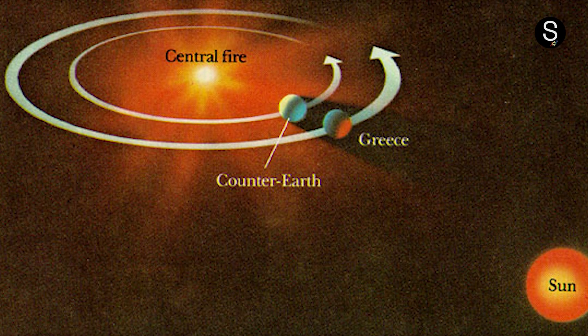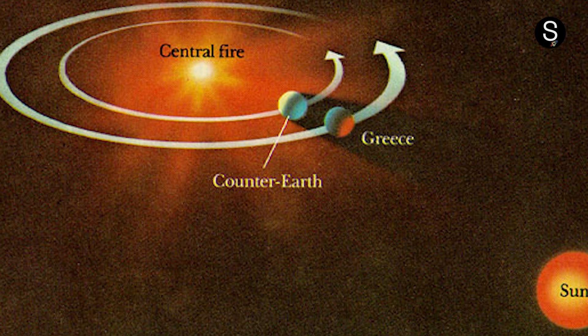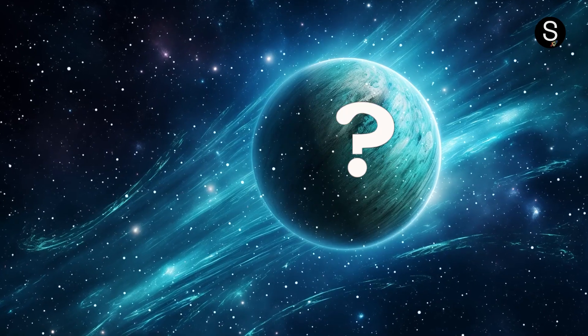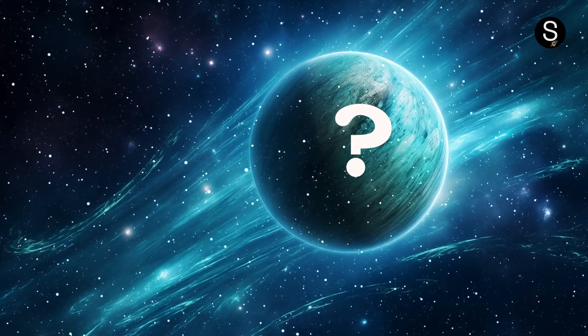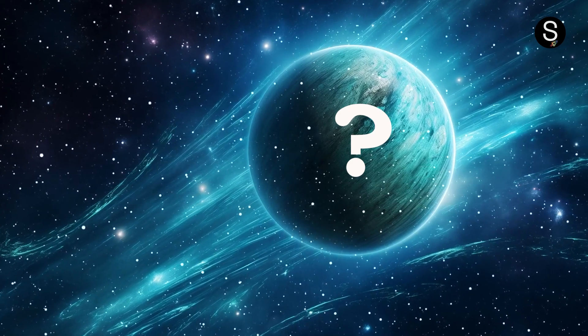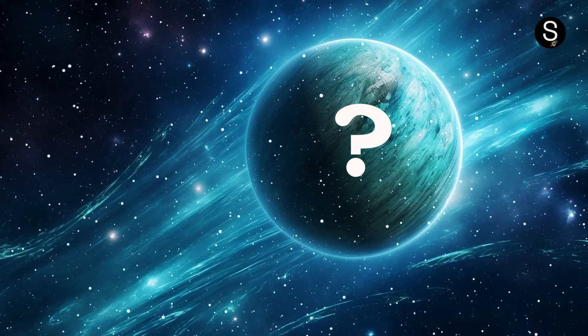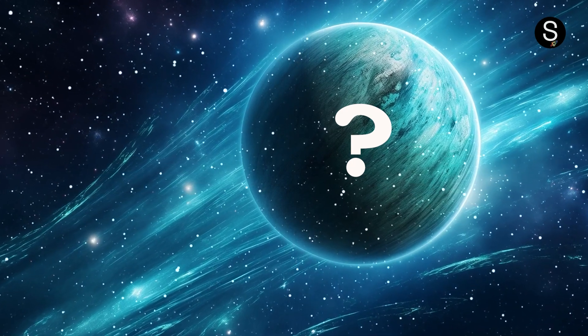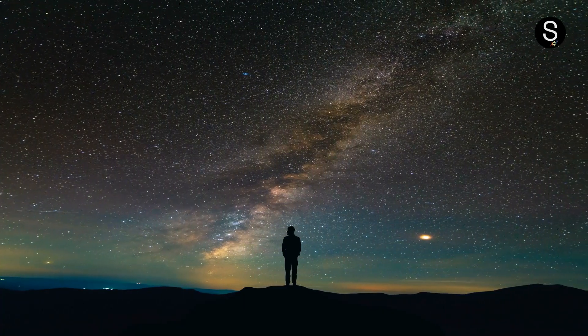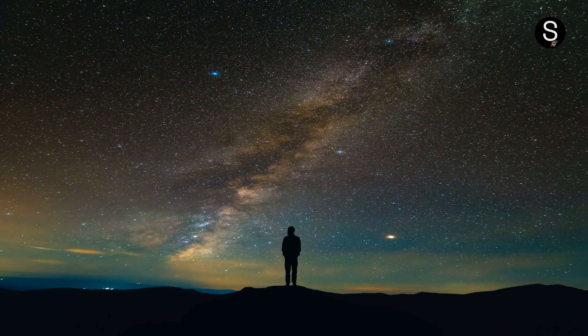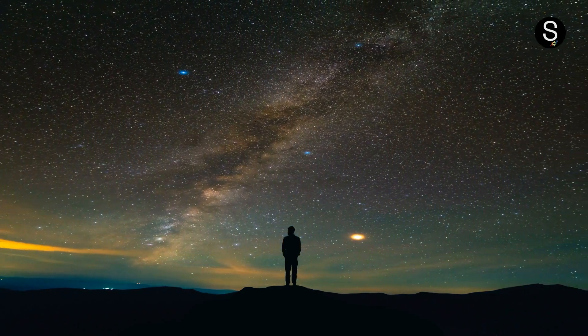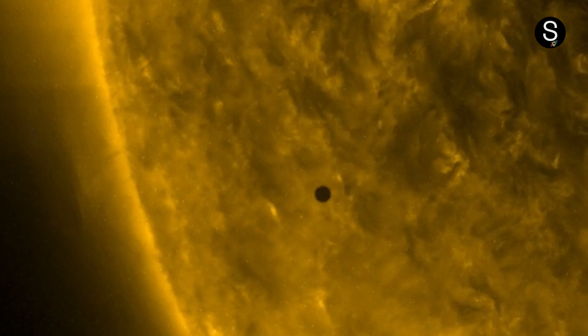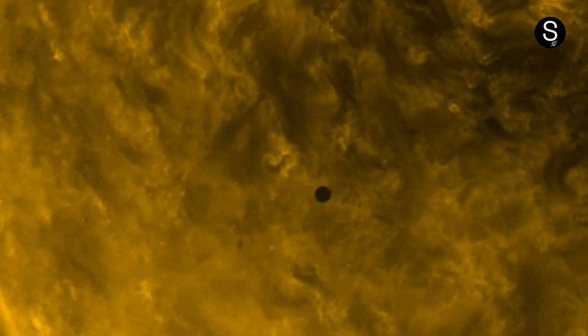It should come as no surprise that our knowledge of the solar system is significantly more advanced than that of ancient Greece. There is still the question of whether or not there is a planet that has not yet been identified that is located directly behind the Sun. In any case, we are unable to see that portion of space from where we are standing. In spite of the fact that it is an intriguing concept, one that is fueled by the imagination of the human mind, if there were an undiscovered planet immediately behind the Sun, we would have seen it by now.